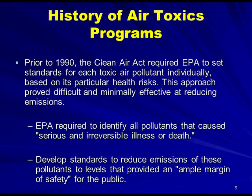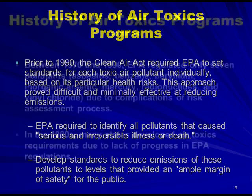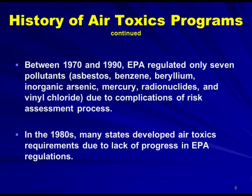A little bit of history of the Air Toxics Program. Prior to the 1990 Clean Air Act Amendments, the Clean Air Act of 1977 required EPA to set standards for each toxic air pollutant individually, based upon its particular health risks. This approach proved difficult and minimally effective at reducing emissions. EPA had to develop standards to reduce emissions to levels that provided an ample margin of safety to the public. Between 1970 and 1990, EPA regulated only seven pollutants.